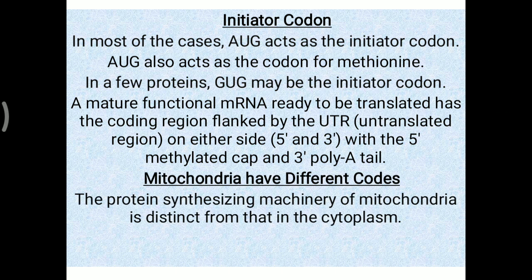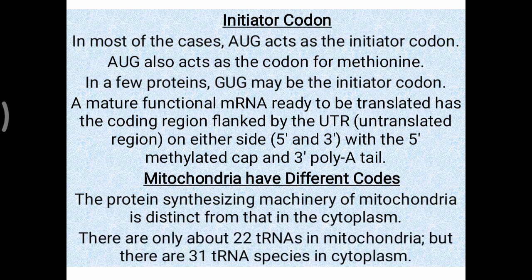Mitochondria have different codons — the protein-synthesizing machinery of mitochondria is distinct from that in the cytoplasm. The DNA of mitochondria also differs. There are only about 22 tRNA species in mitochondria, compared to 31 tRNA species in the cytoplasm — that difference of 22 versus 31 is important to remember.